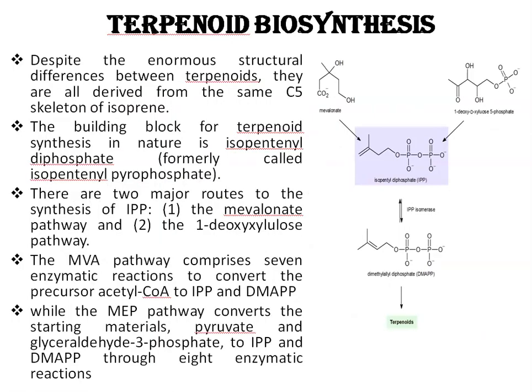Next is terpenoid biosynthesis. Despite the enormous structural differences between terpenoids, they are all derived from the same C5 skeleton of isoprene. The building block of terpenoid synthesis in nature is isopentenyl diphosphate, formerly called isopentenyl pyrophosphate (IPP). There are two major routes to the synthesis of isopentenyl pyrophosphate: one is the mevalonate pathway and the second is the deoxyxylulose pathway.